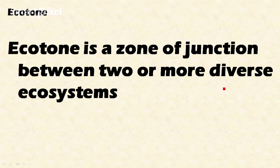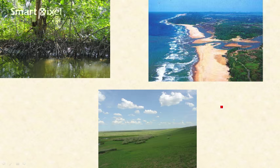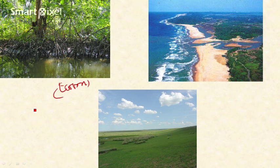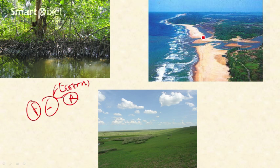It is a transitionary zone between two or more diverse ecosystems — a zone of junction and a zone of transition. For example, this is a mangrove ecosystem. This ecotone is the zone of transition between the forest ecosystem and the river water ecosystem. So mangrove forests are the ecotone — the zone of transition between the forest and river water ecosystem.